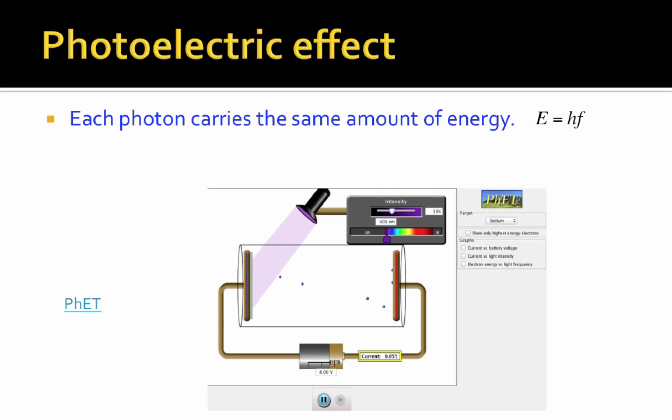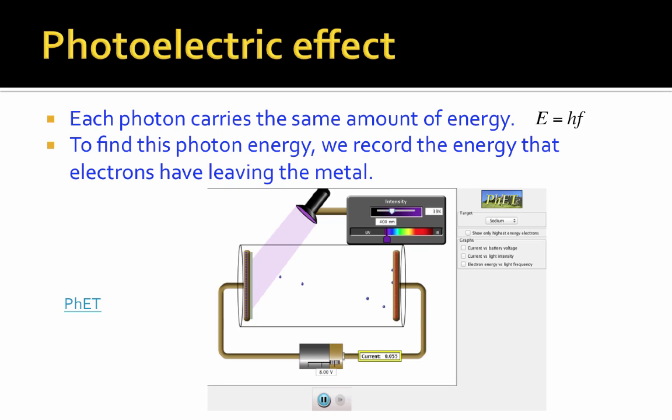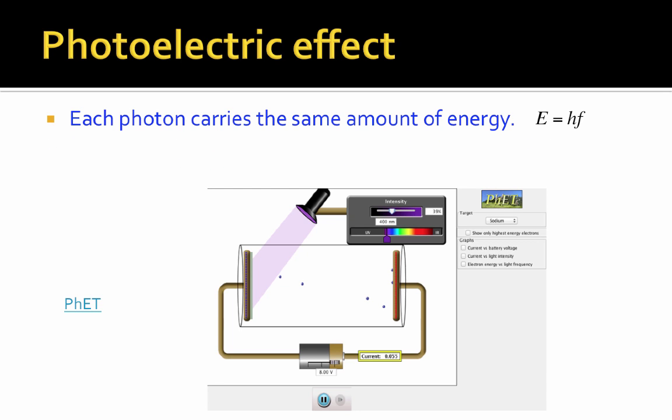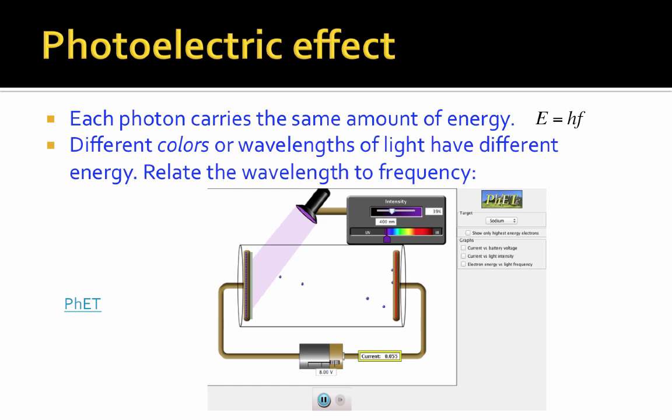In the photoelectric effect, each photon carries an amount of energy that we described, E equals hf. And in order to find the photon energy, what we're going to do instead is record the energy that electrons have when they leave the metal. Something else that we want to think about is how different colors have different energy. A color or a wavelength is related to the frequency by f equals c over lambda, or lambda equals c over f. So you can convert between frequency and wavelength using that expression.